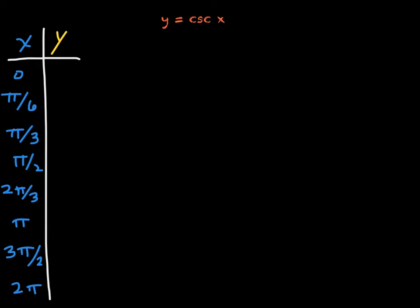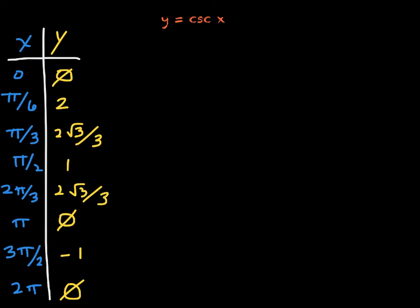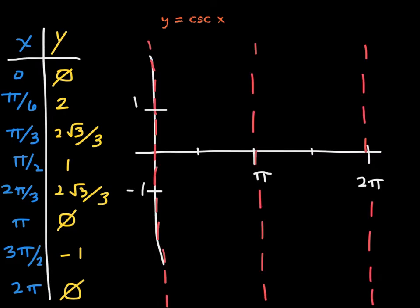Now let's get the cosecant function and its graph. The cosecant function is undefined at any multiple of pi. So at 0, pi, and 2 pi, it will be undefined — those are the locations of the vertical asymptotes. After evaluating the cosecant function, we're ready to graph. At pi over 2 you're at 1, and at pi over 6 you're up at 2, which leads us to believe that this branch is opening upward.